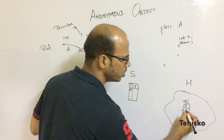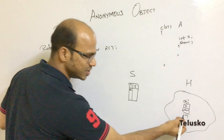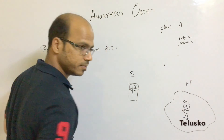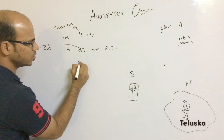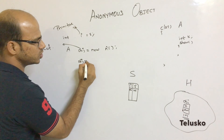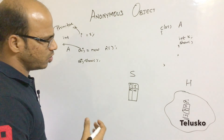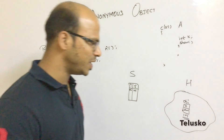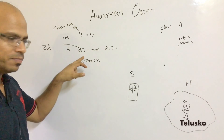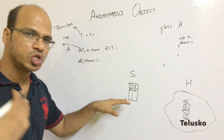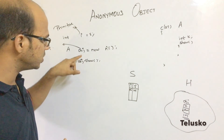The heap object has two sections: one for properties and one for methods. The address 101 is stored inside the stack reference 'obj'. So to call the method, you write obj.show(). But creating an object takes space in both heap and stack memory. Every time you create a reference variable, you consume stack memory.